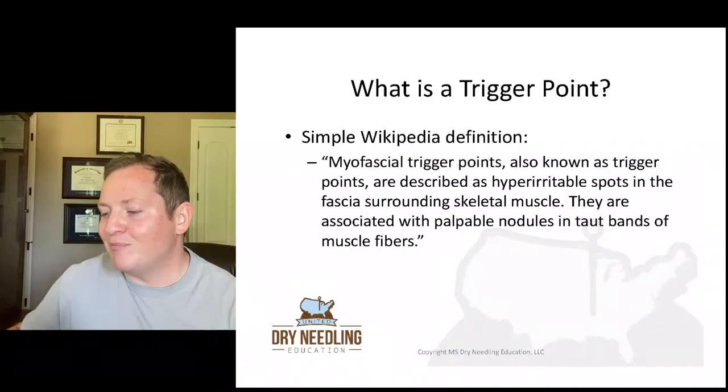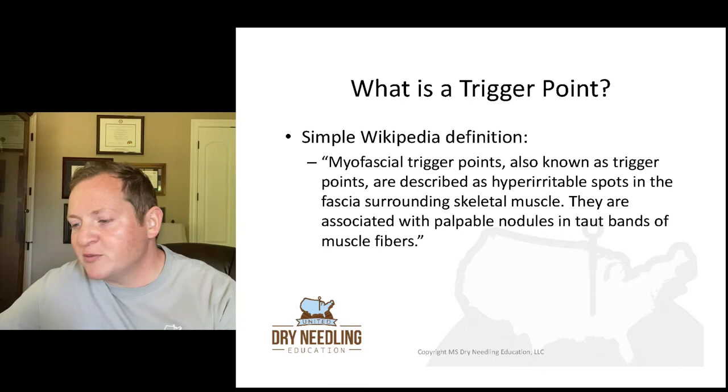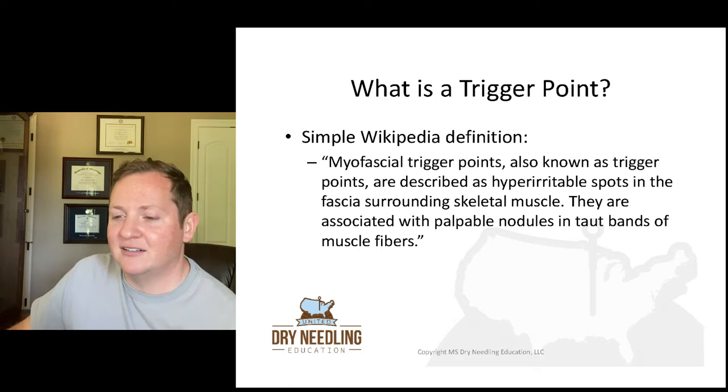You can't really talk about trigger points until you understand what one is, so we need to define a trigger point. I like to use Wikipedia because if you start talking to your patient about a trigger point, the first thing they're going to do is Google it and Wikipedia will be one of the first results. The Wikipedia definition: myofascial trigger points, also known as trigger points, are described as hyper-irritable spots in the fascia surrounding the skeletal muscle, associated with palpable nodules in taut bands of muscle fibers.